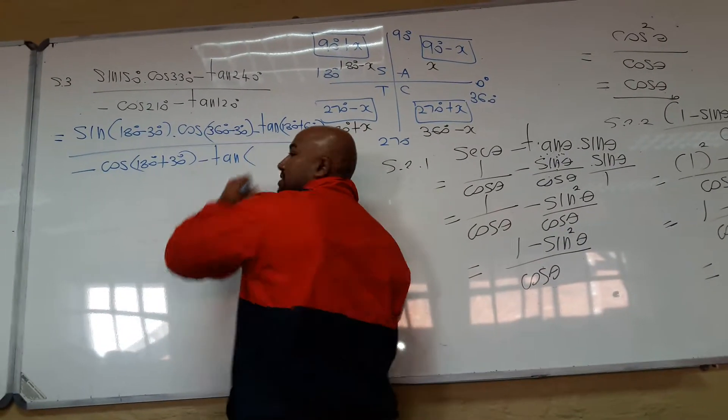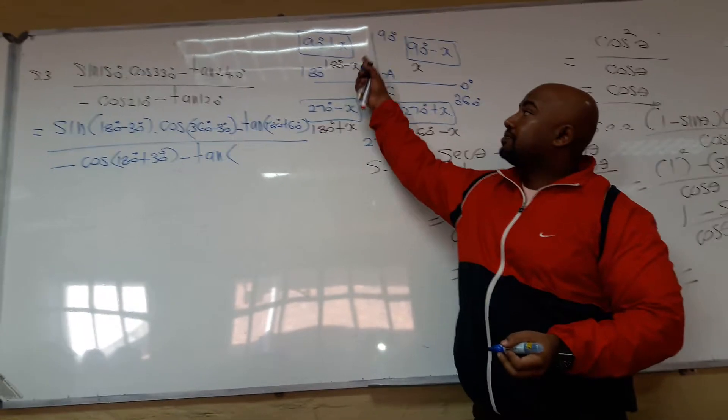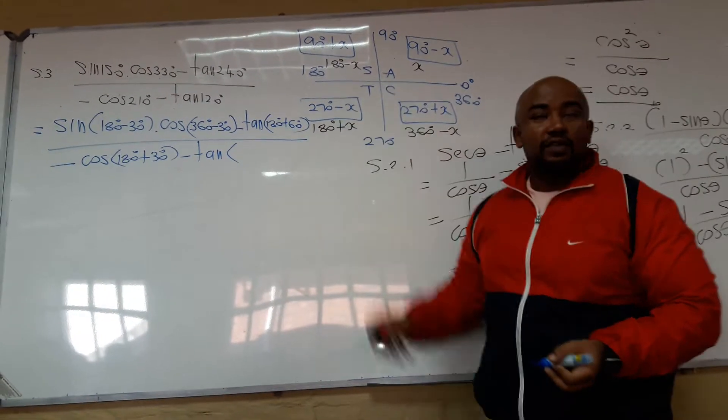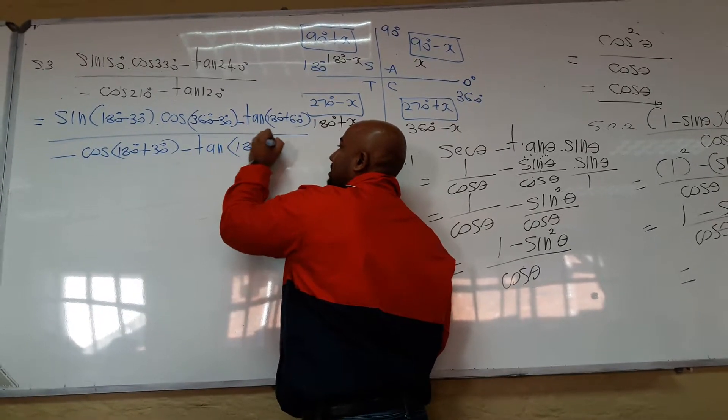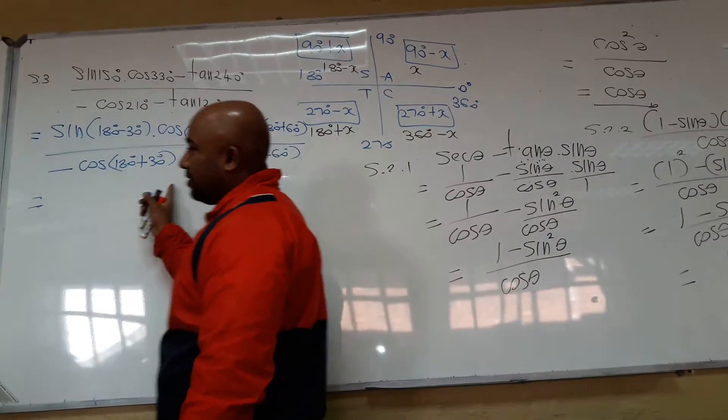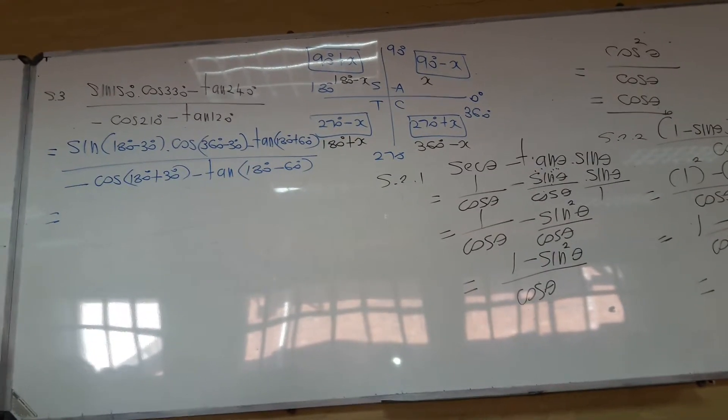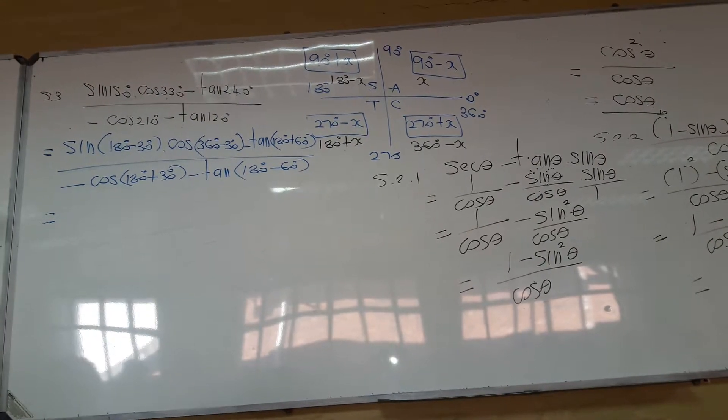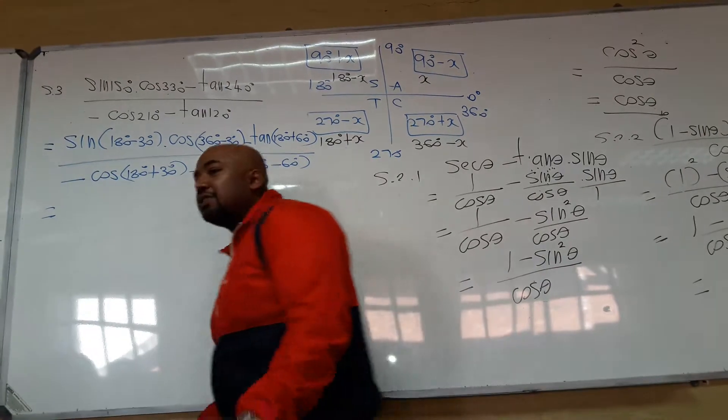Let's deal with 120 degrees. 120 degrees, which quadrant? Second quadrant. So, that will be 180 degrees minus 60. So, now, it's almost the same thing that we are doing here. Can you see that? It's just that we don't have x. We have the real angle. So, I'm going to do this quickly.